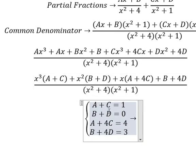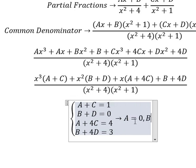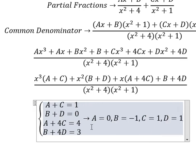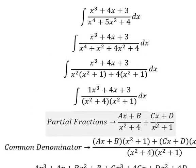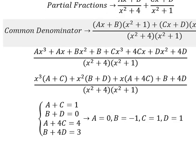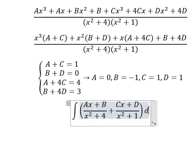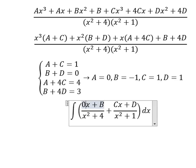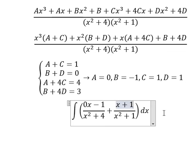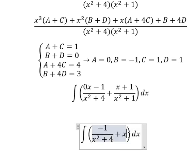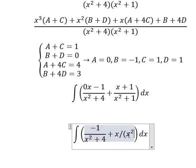Now we find the solutions: a = 0, b = -1, c = 1, d = 1. We substitute a, b, c, d back into the partial fractions expression.